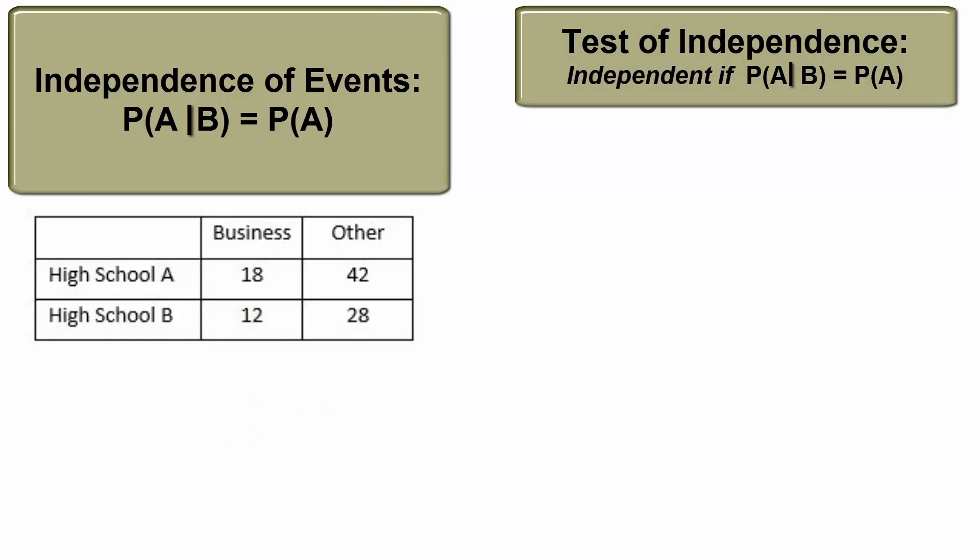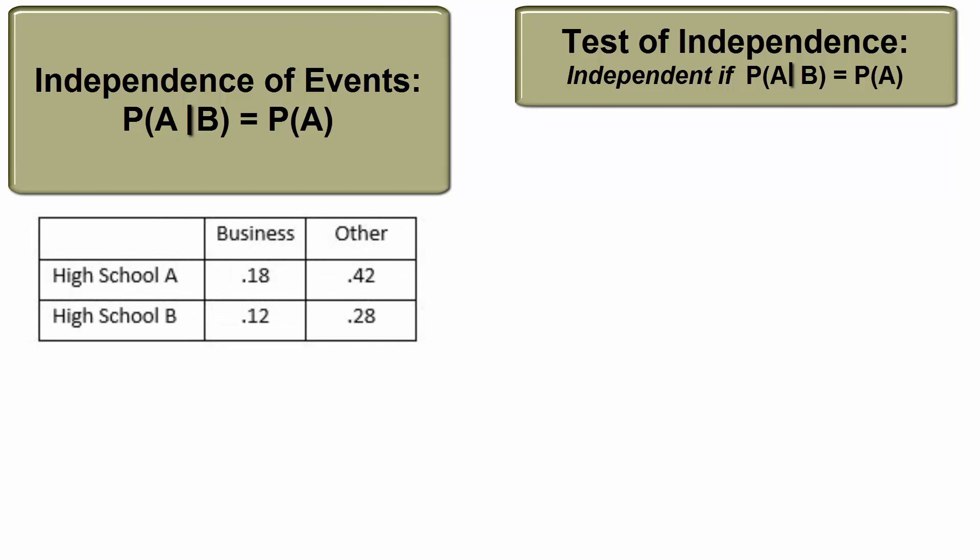Here's another important attribute of independence. Let's change the counts to proportions. When variables or events are independent, we can multiply probabilities to find the probability of the intersection. In this case, when n equals 1, the probability of selecting a student who is from high school A and is declaring a business major can be found by multiplying the probability that the student comes from high school A by the probability that they've declared business as their major. 0.6 times 0.3 is 0.18.